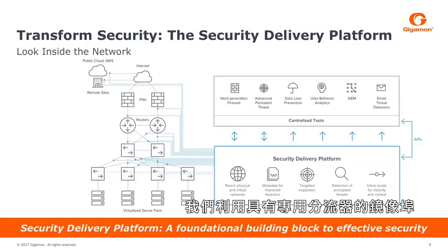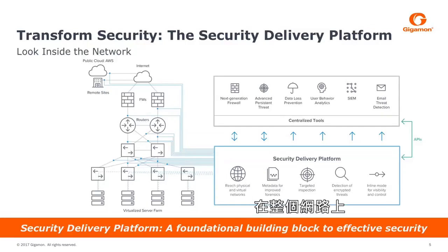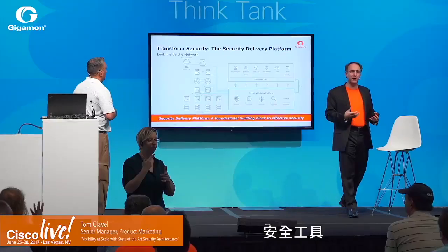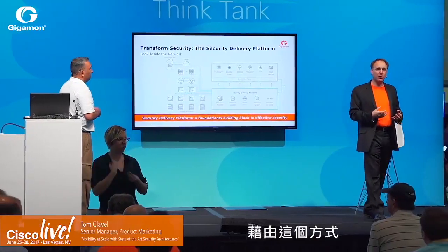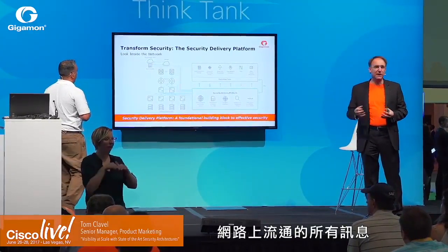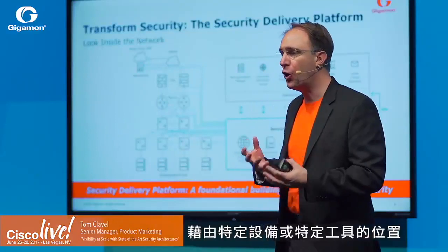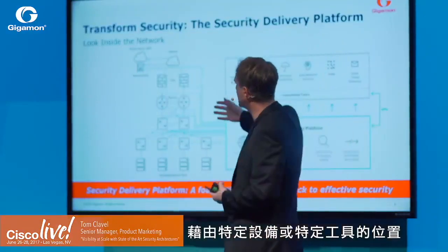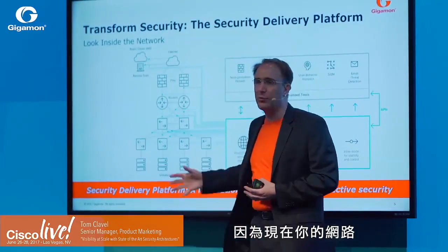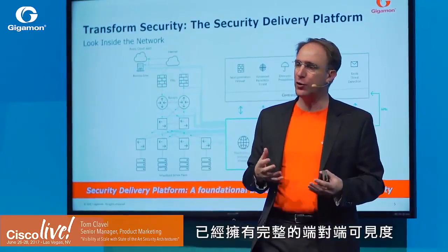We plug our security delivery platform throughout the network, either on the span port of your switches with dedicated taps or with virtual taps on your virtual machines. We collect the data and we feed the data to your various security tools. By doing so, your firewalls have access to the entire information running on the network. You're no longer bound by the location of a specific device or tool, because now you have comprehensive end-to-end visibility over your network.